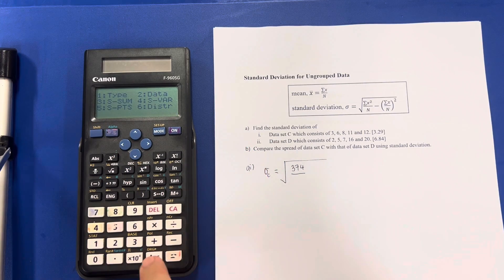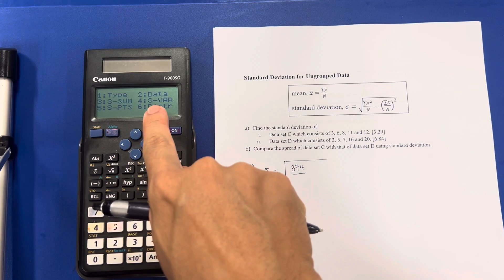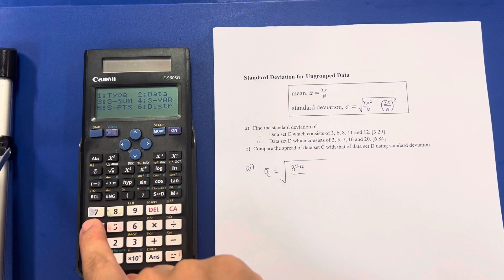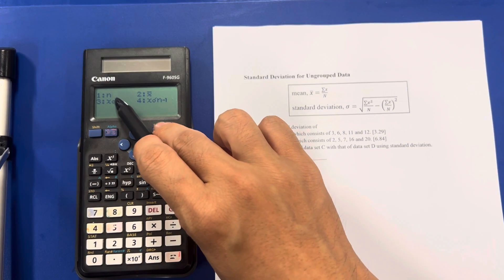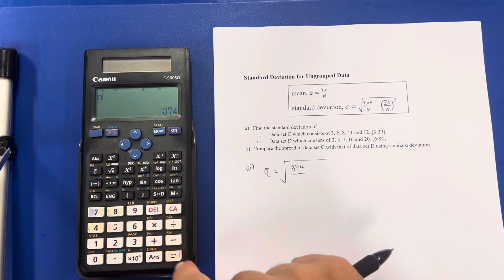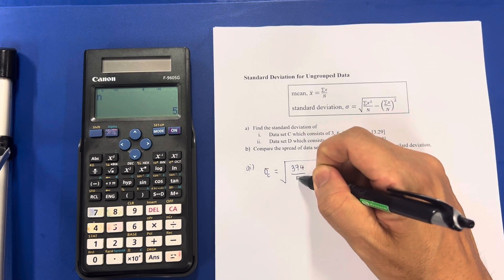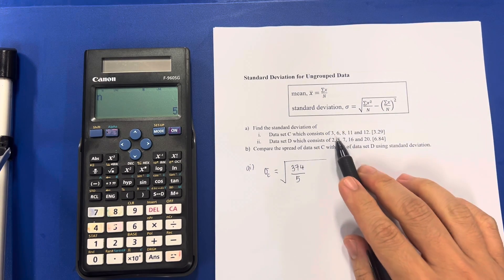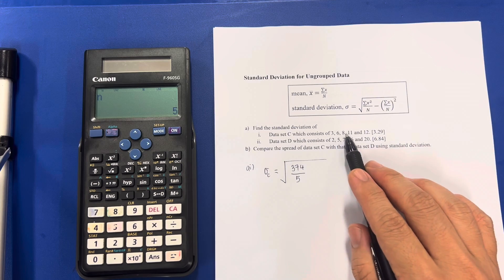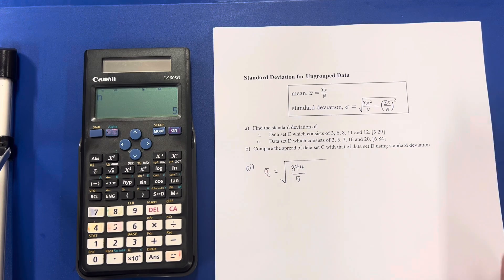SHIFT, 1 again. And this time around, I do want to press 4 because that's where I get my N. 5. Anyway, the N is pretty straightforward. There are only 5 data here. 1, 2, 3, 4, 5. So actually, N is 5.